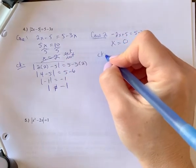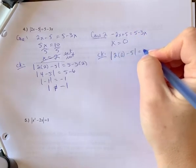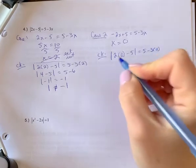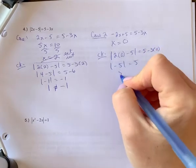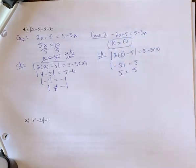Let's check this one. So we're going to put in 0 there. So we're going to get negative 5 equals 5. Positive 5 now equals positive 5. So this is true. So your solution is x equals 0.